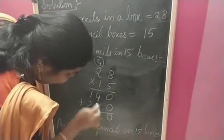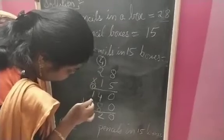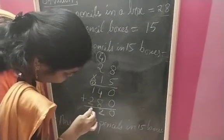Write 2 and carry over 1. Now, 1 plus 1 is 2, 2 plus 2 is 4.